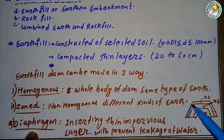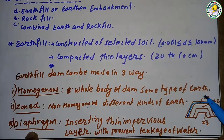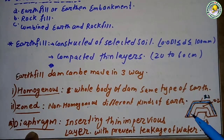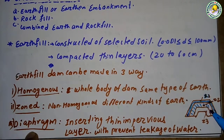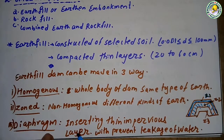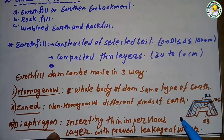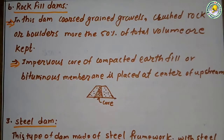In the zoned type, if the dam has multiple layers, the first layer is of one soil type (Zone 1), the second layer is of a different soil (Zone 2), and the third layer can be of yet another soil (Zone 3). In the diaphragm method, a thin impervious layer is inserted to prevent leakage of water through the dam.